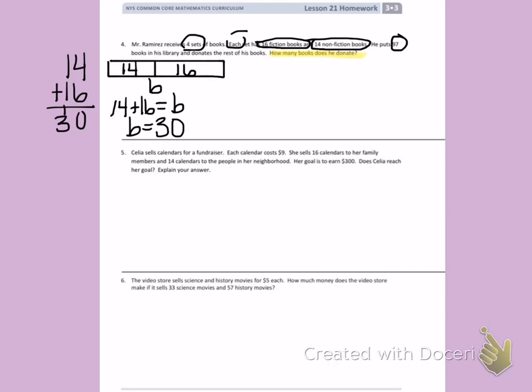But Mr. Ramirez has more than one set. He has 4 sets. So I'm going to draw another tape diagram. And this time, I'm going to have 4 sets of books.